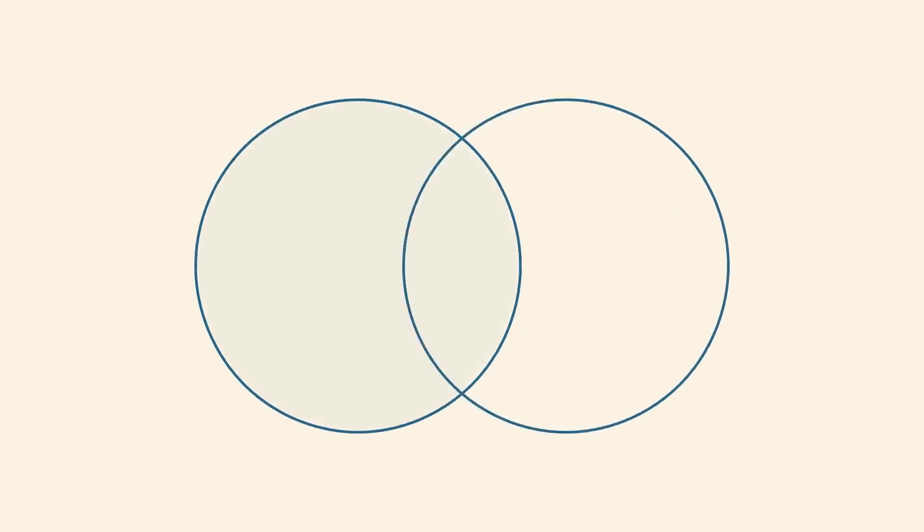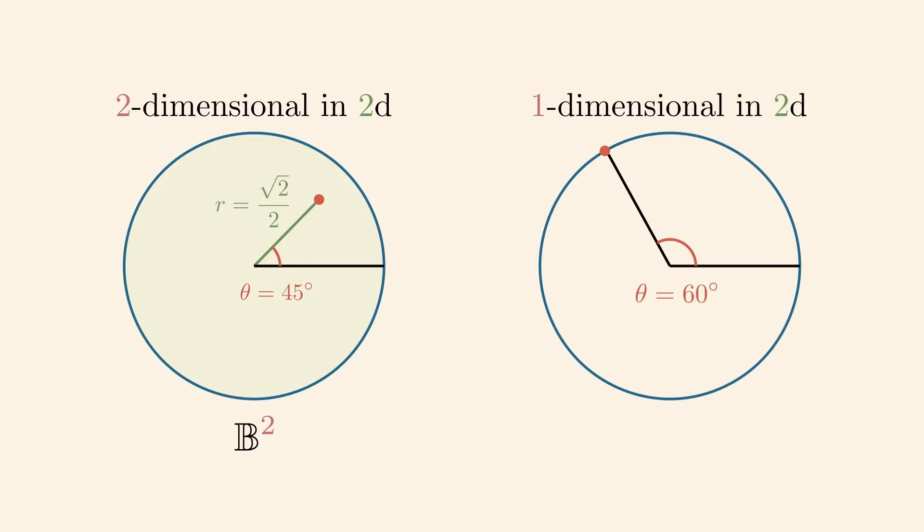At the beginning, there's a circle. This circle has a filled version and an empty one. The filled version is a two-dimensional object embedded in two-dimensional space. You have two degrees of freedom in choosing a point on this disk. This object is therefore called the two-ball or B2. Its boundary, on the other hand, is, though embedded in two-dimensional space, a one-dimensional object. You only have one degree of freedom in choosing a point on it: the central angle. So, this object is called the one-sphere or S1.